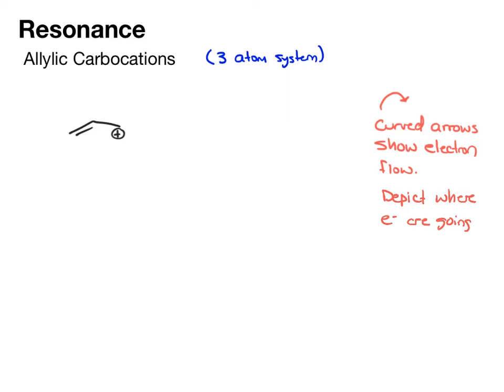If we come back to our allylic carbocation here, I'm going to highlight the pi bond in blue again. That's our source of electrons. When we move electrons in resonance systems, we're going to be moving pi bonds and lone pairs. Sometimes that movement results in the movement of a charge, but we're not really showing charge movement.